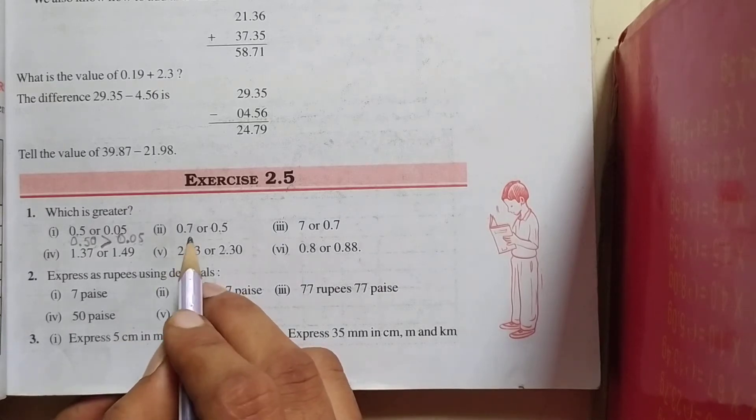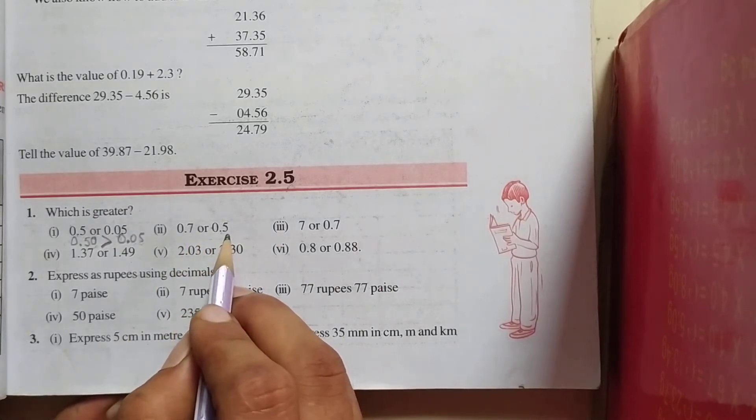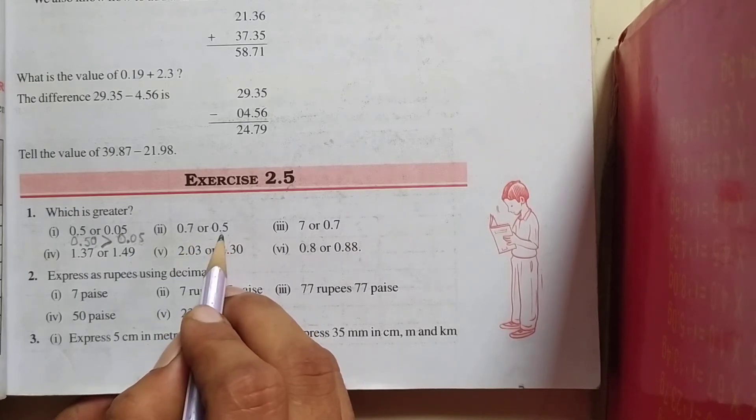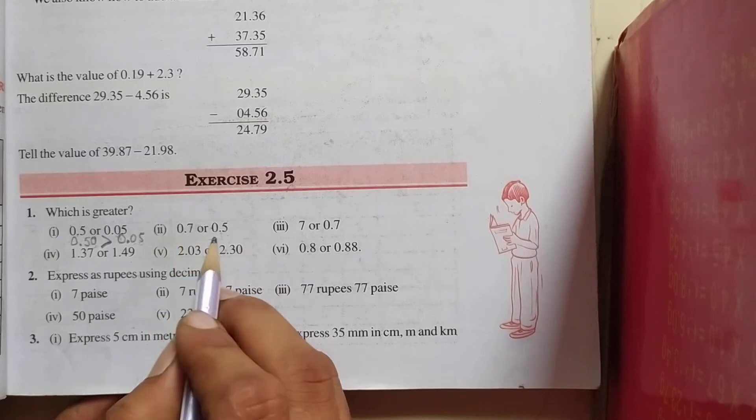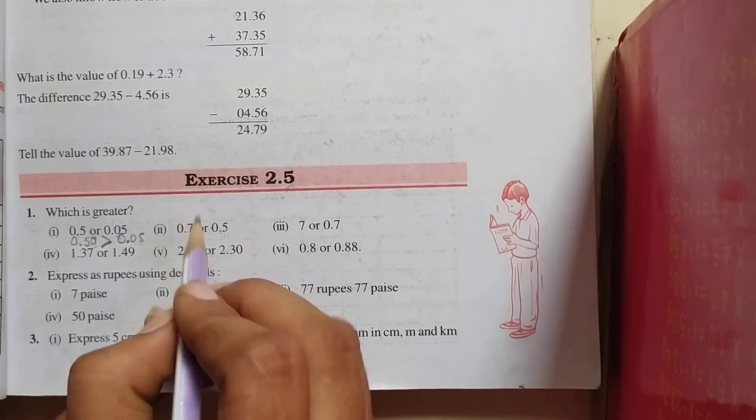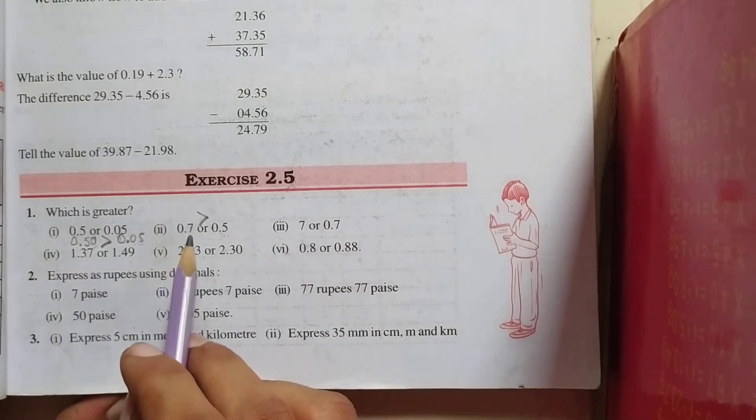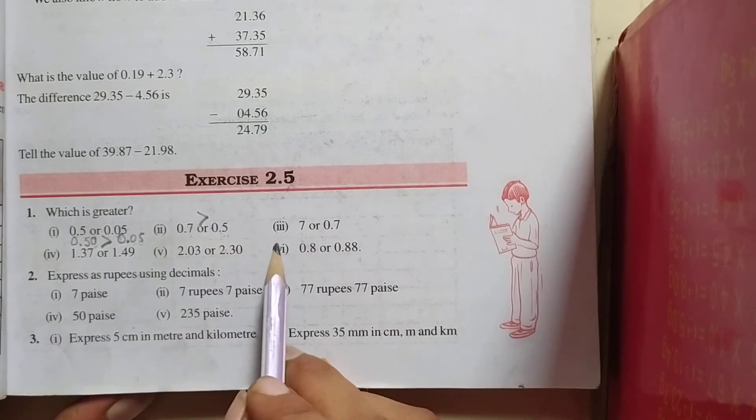Now, second, 0.7 or 0.5. We can compare easily because one decimal place is there in both decimals. So, here is 0.7 and here is 0.5. So, put the sign of greater than. 0.7 greater than 0.5. Next.